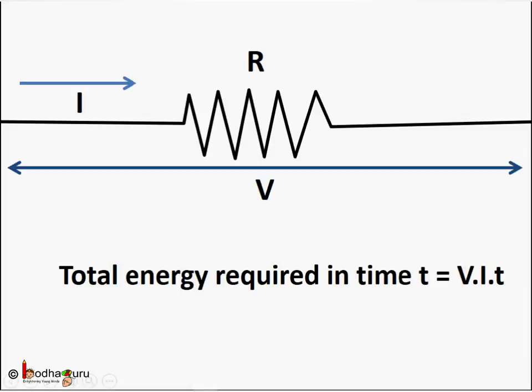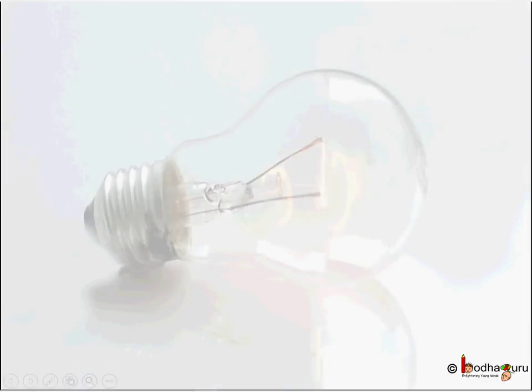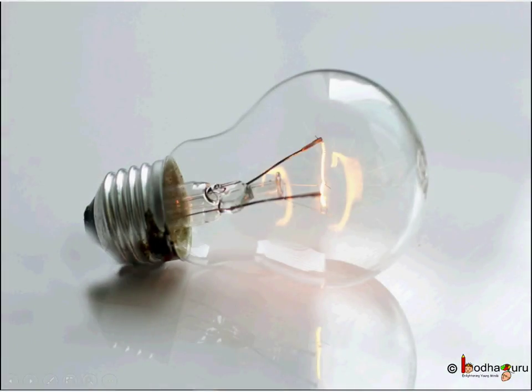As we saw in the earlier lesson about electric power, energy required in a circuit for running it for time T equals V into I into T. What happened to this energy expended? This energy gets converted from electrical energy in the resistor to heat energy, so heat energy is equal to V into I into T.